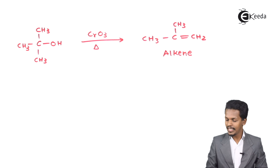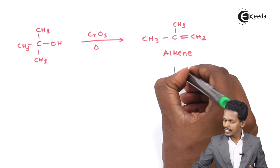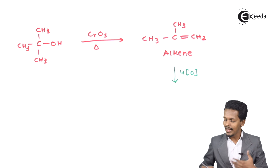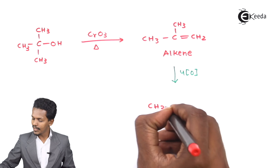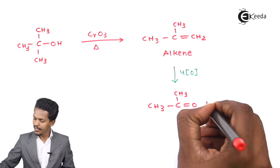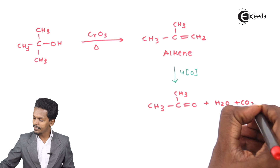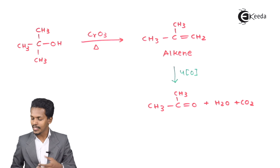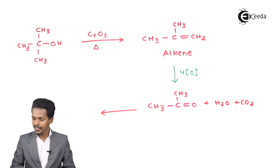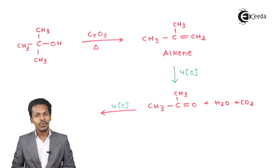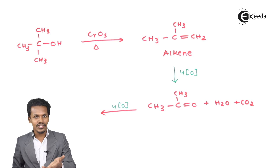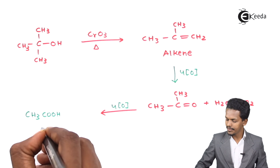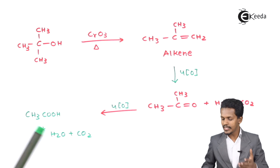Even this alkene cannot stop at oxidation — we perform excessive or vigorous oxidation using K2Cr2O7. The alkene is first converted to a ketone: CH3C(=O)CH3, plus H2O and CO2 as byproducts. This ketone can further react with oxygen and undergo further oxidation using 4 nascent oxygen atoms from K2Cr2O7. The final product obtained is CH3COOH (acetic acid), plus H2O and CO2.